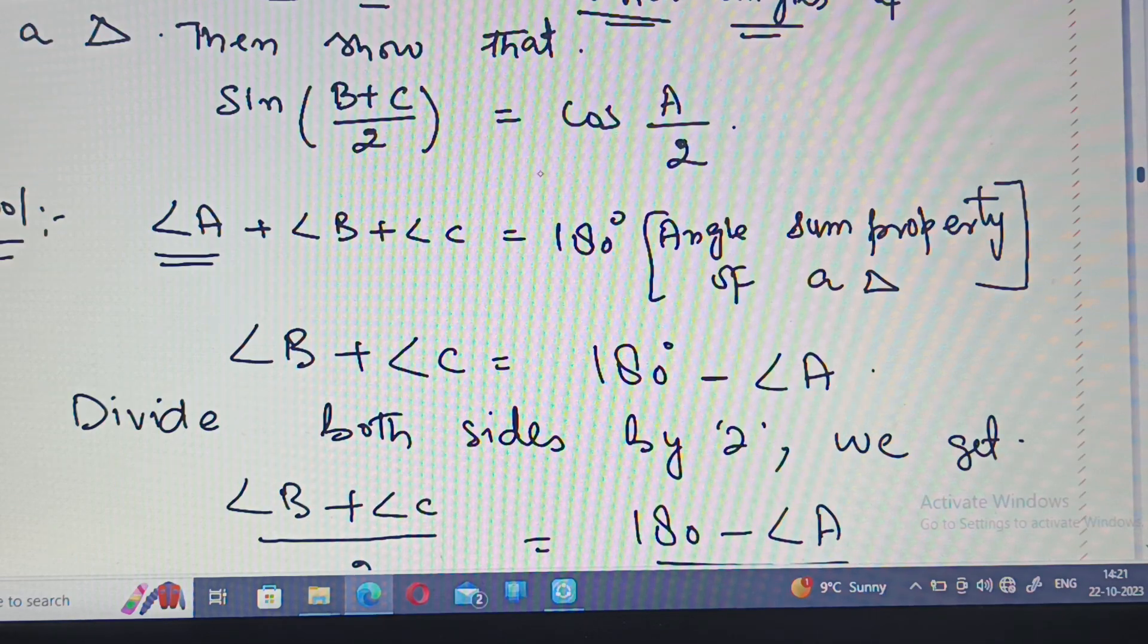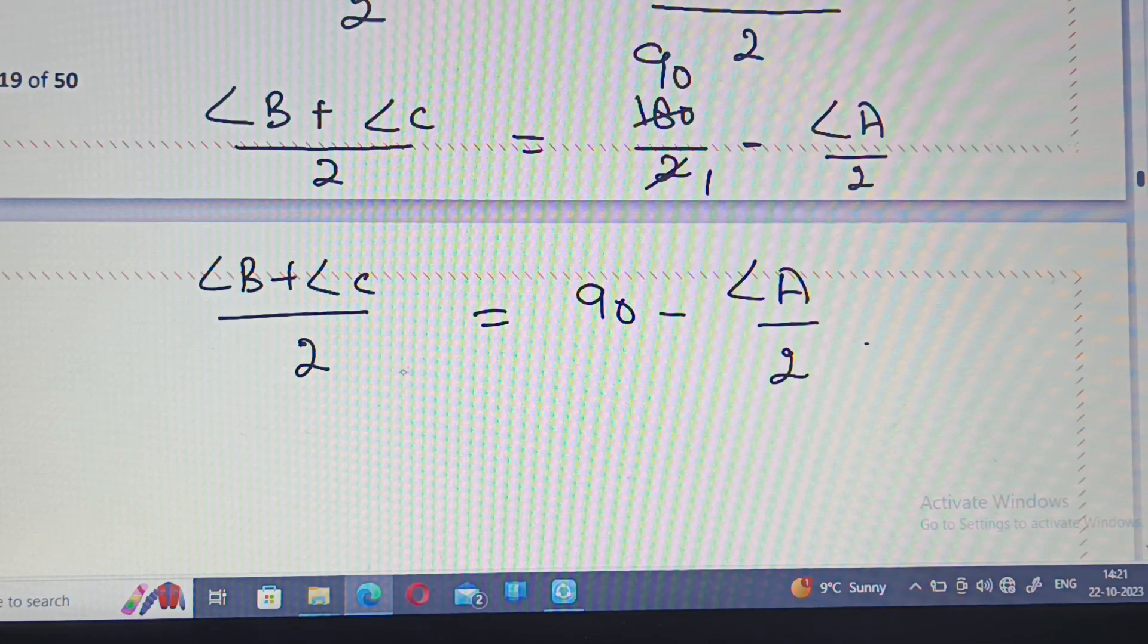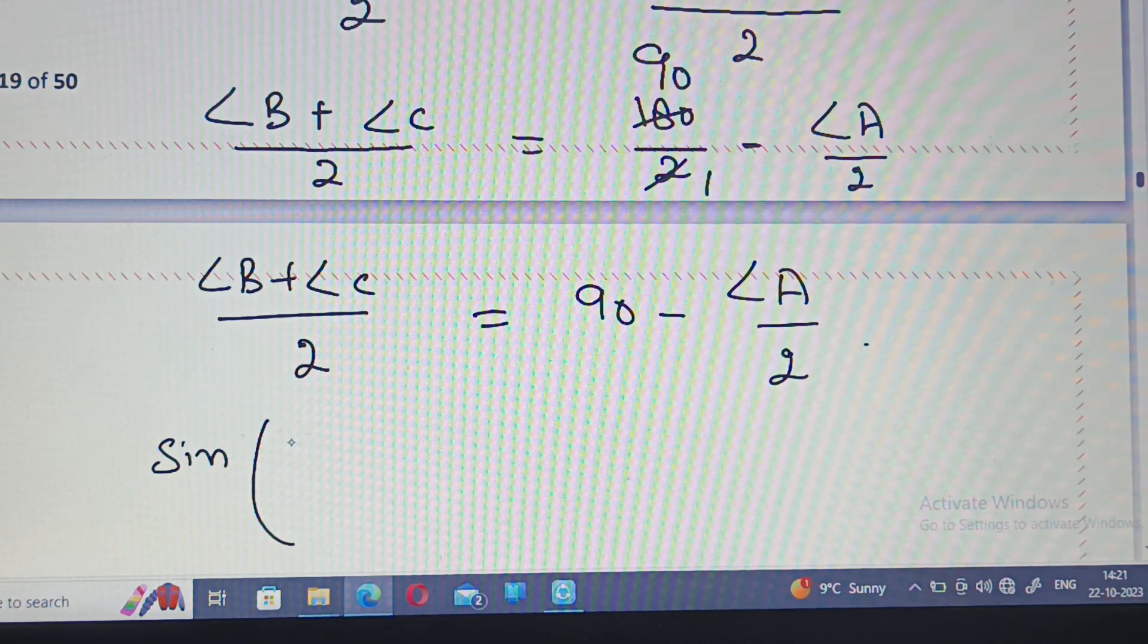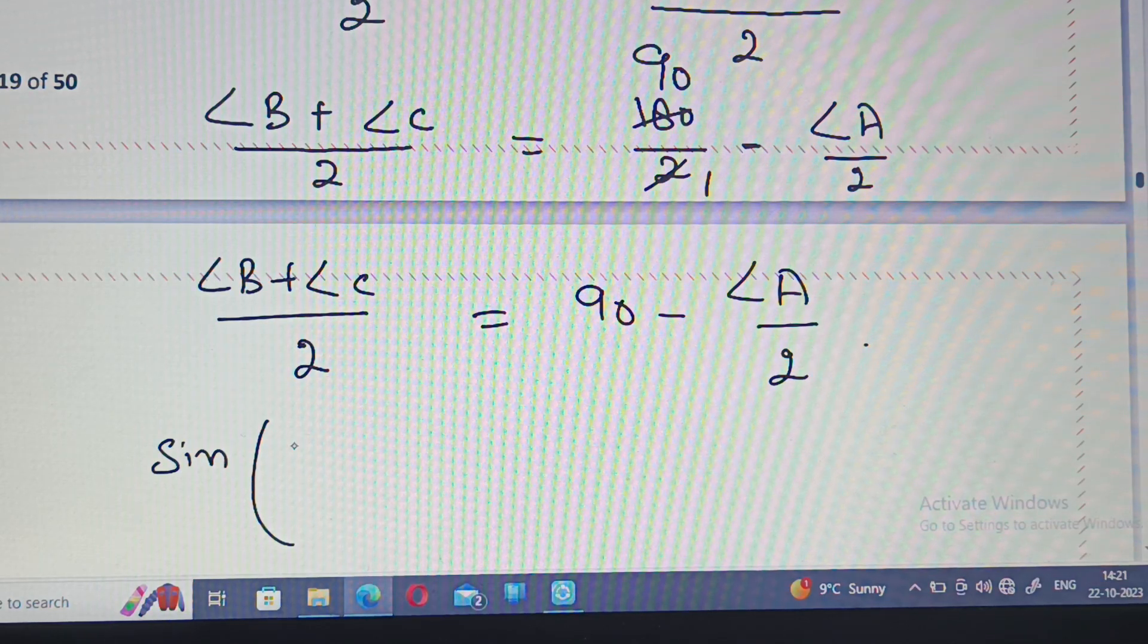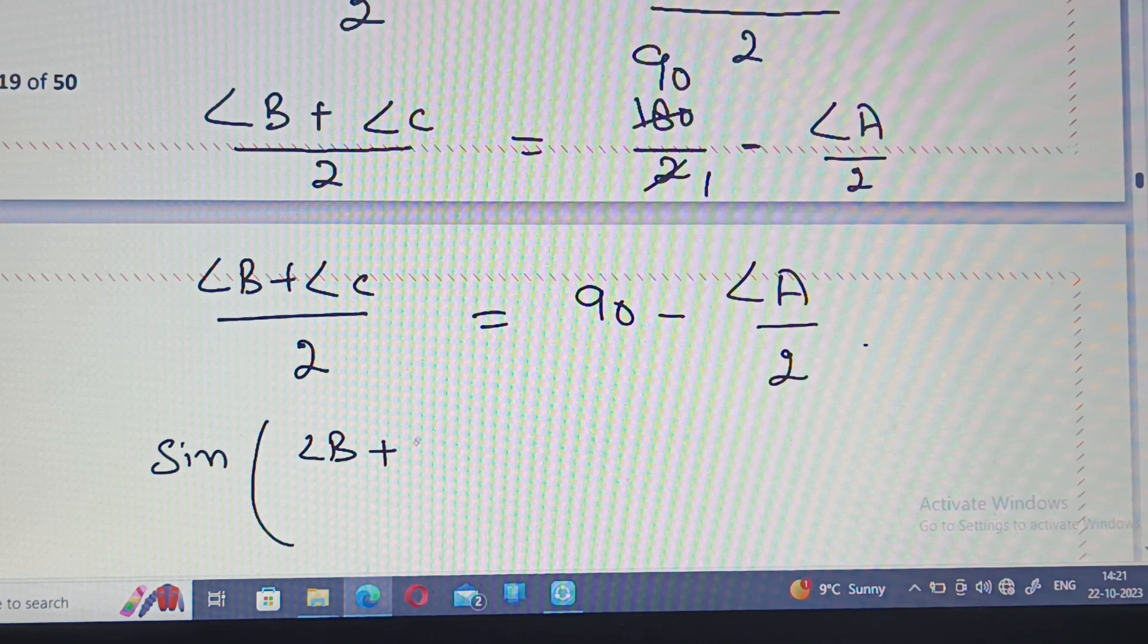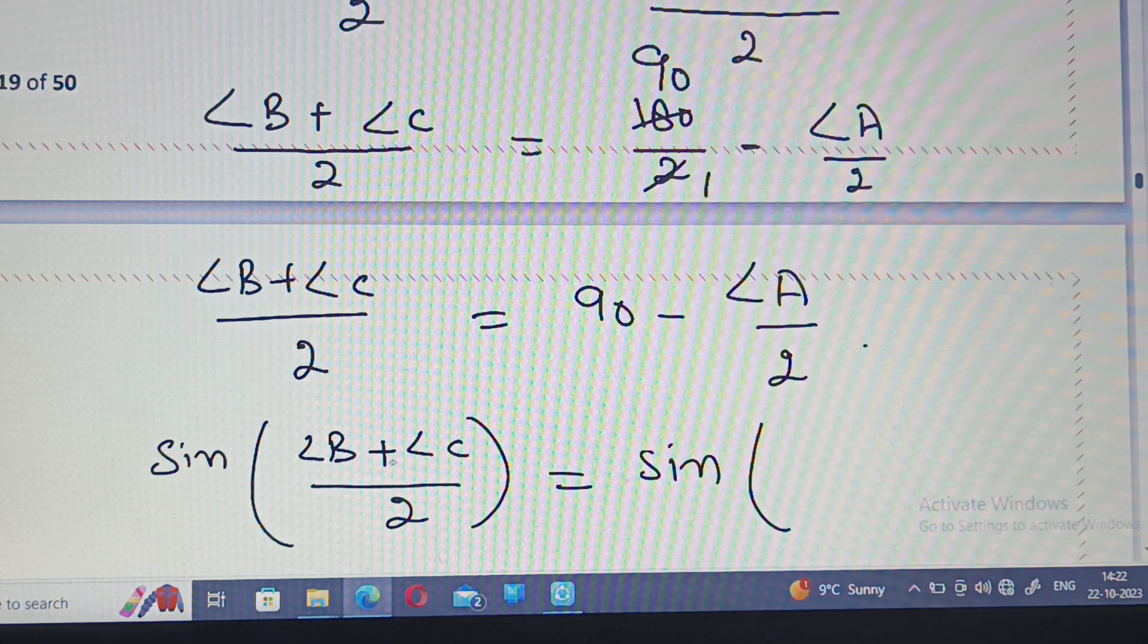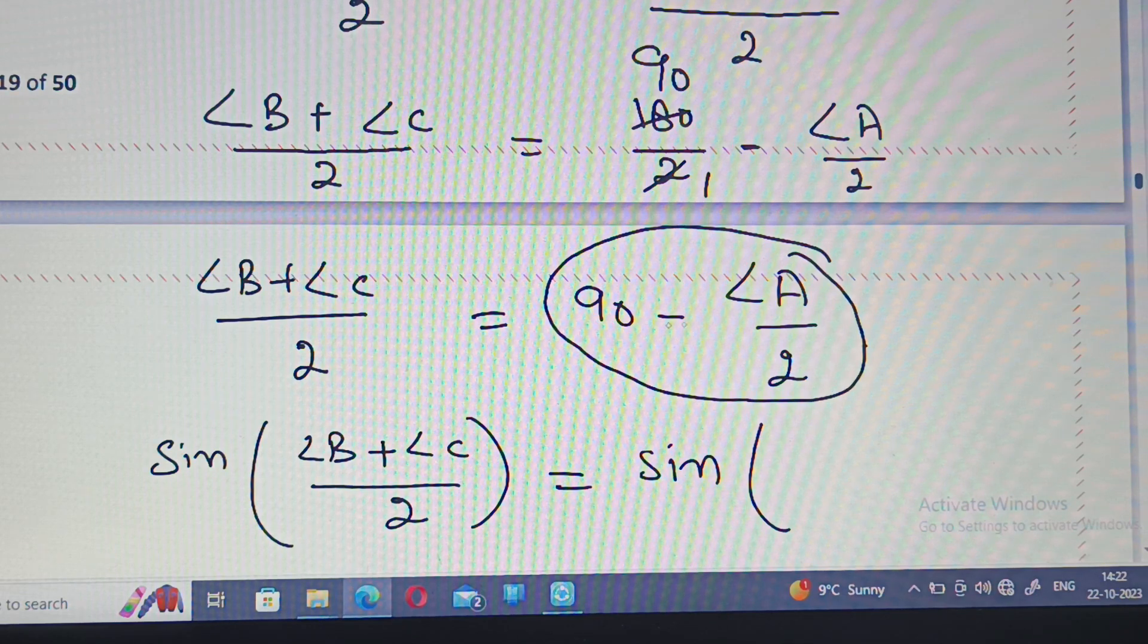Now on the left side, take sine. Sine of angle B plus C divided by two. On the right side, the value is 90 minus angle A upon 2, so sine of B plus C divided by 2 equals sine of 90 minus angle A divided by 2.